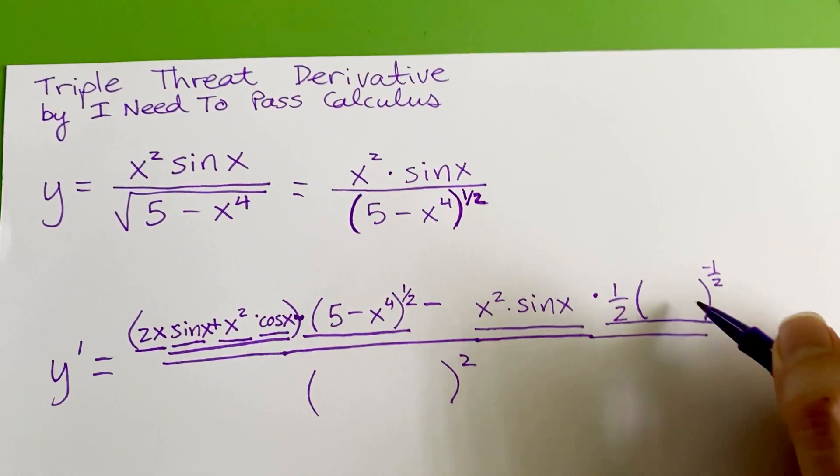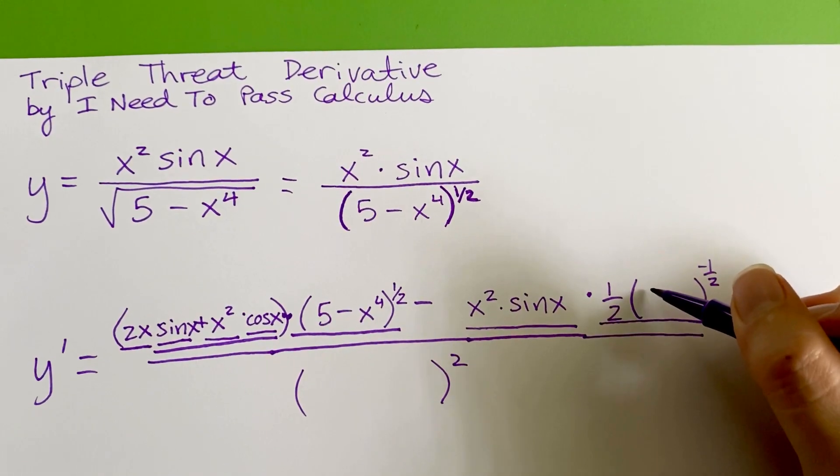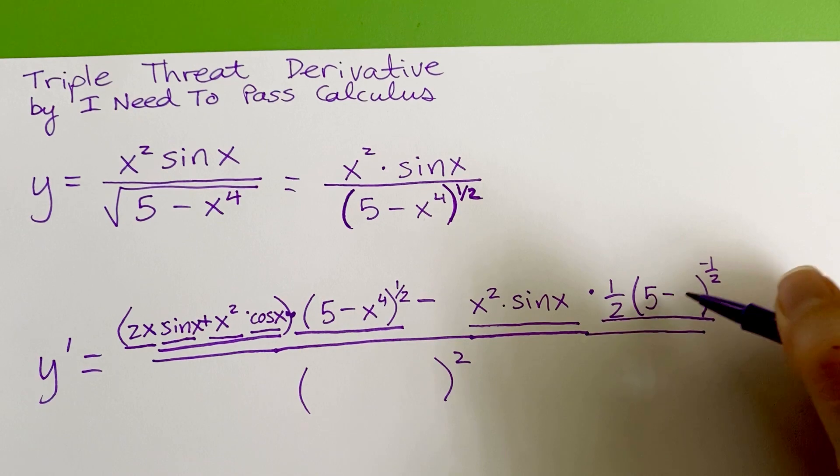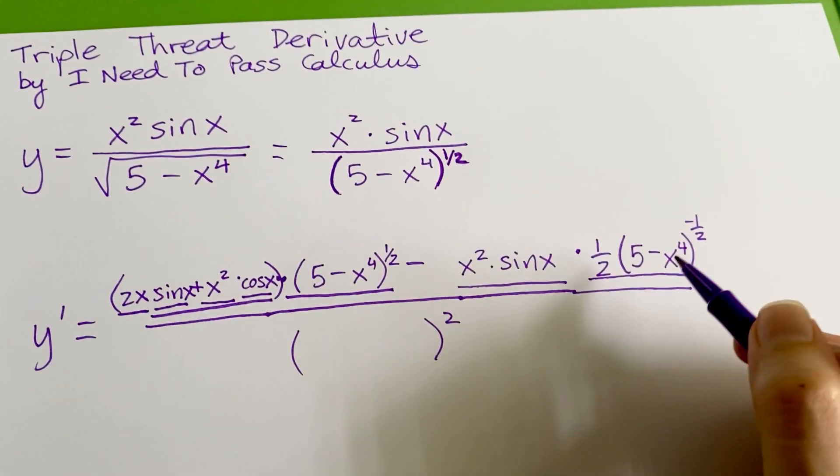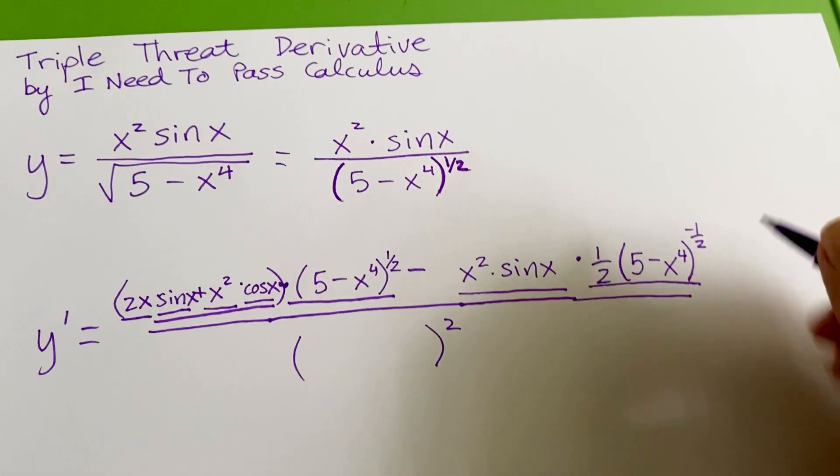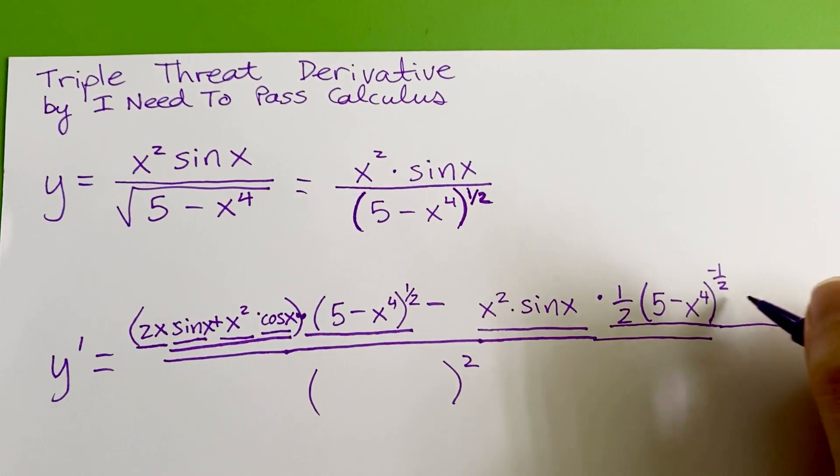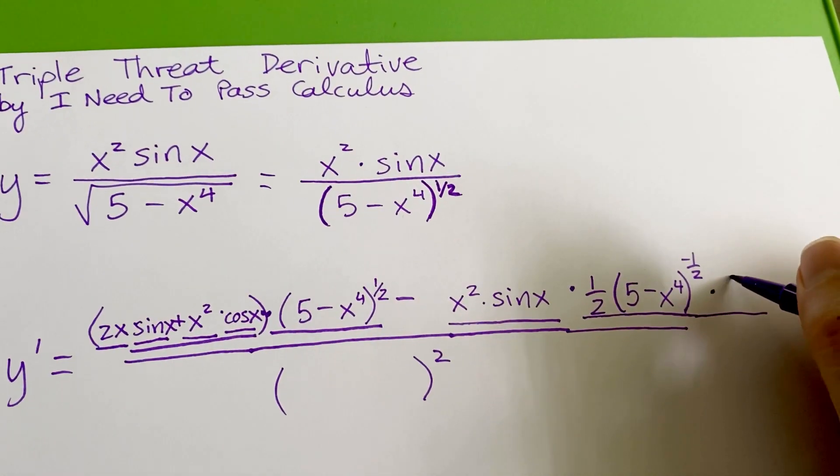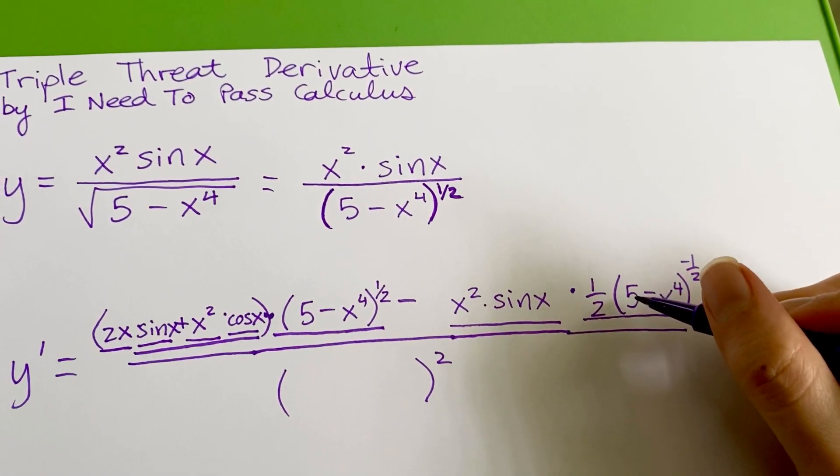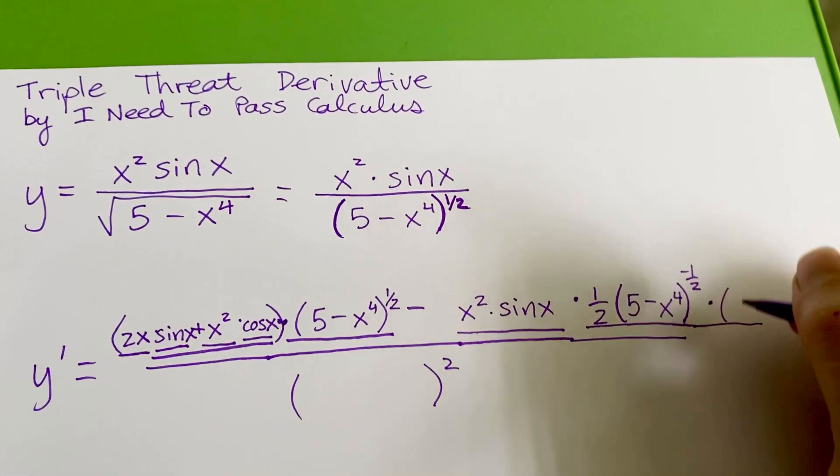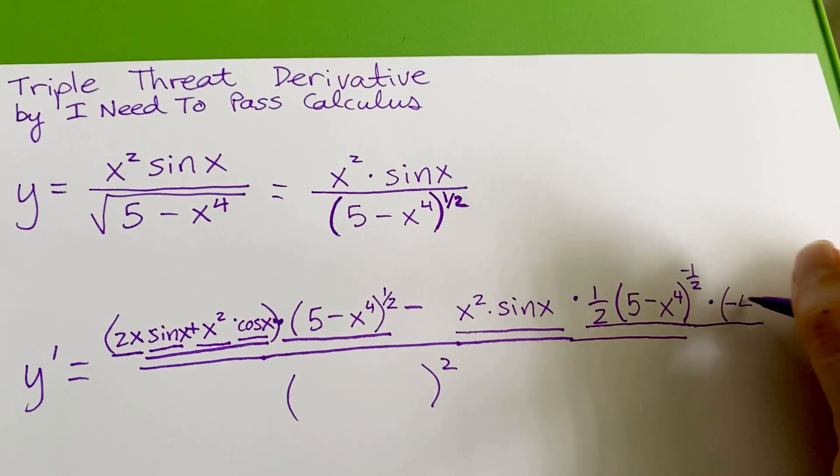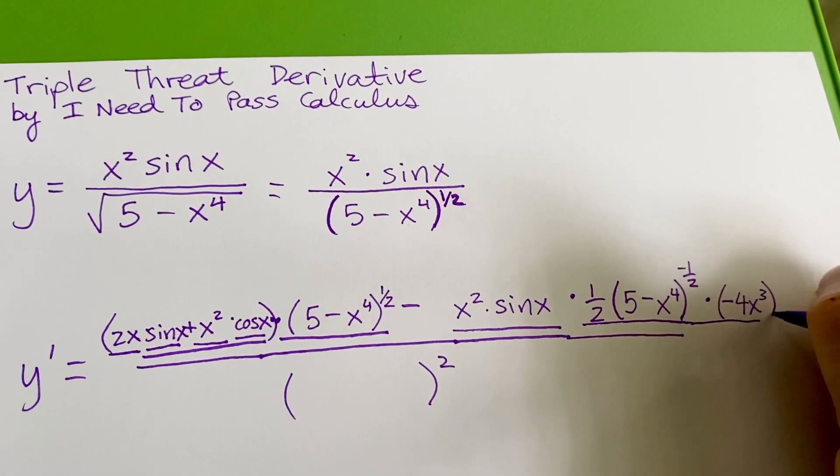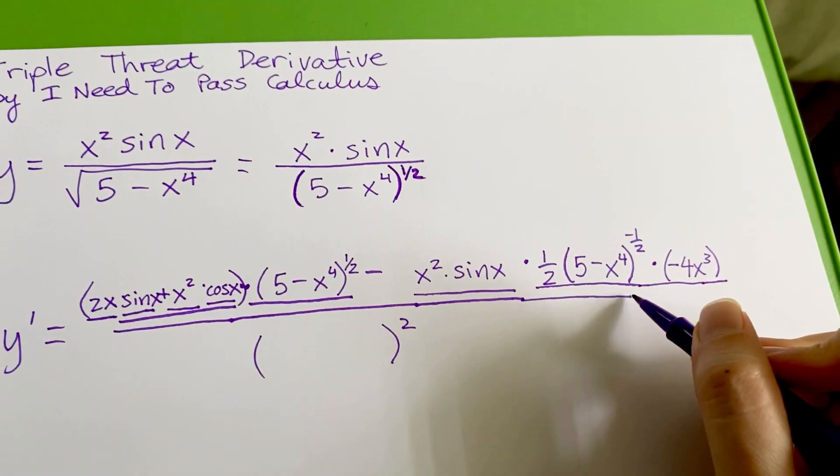And for the chain rule, you leave the inner part unchanged for the first part. So five minus x to the fourth, your inner function stays unchanged. And you have to multiply by the derivative of your inner part. So times zero minus four x cubed. So minus four x cubed is our derivative of the inner part.